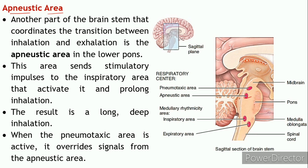The apneustic area is located in the lower regions of the pons and is also involved in coordinating the transition between inhalation and exhalation. It sends stimulatory impulses to the inspiratory area - opposite to the pneumotaxic area. As it activates the inspiratory area, inhalation gets prolonged, resulting in long and deep inhalation. When the pneumotaxic area is more active, it overrides the signals from the apneustic area.